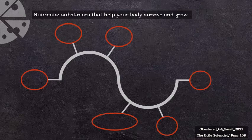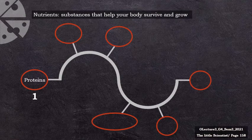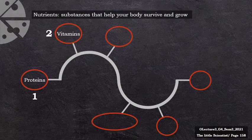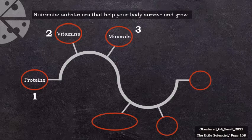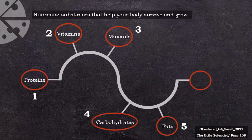Nutrients are needed to live a healthy life and to perform various life activities. So nutrients are the substances that we get from food and that help us to stay in a healthy state and to perform different life activities. There are six types of nutrients: proteins, vitamins, minerals, carbohydrates, fats, and water.